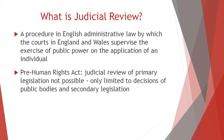Prior to the Human Rights Act, the English doctrine of parliamentary supremacy meant that the law did not, generally speaking, allow judicial review of primary legislation, namely laws passed by the Parliament of the United Kingdom. A person wronged by an Act of Parliament, therefore, could not generally apply for judicial review.